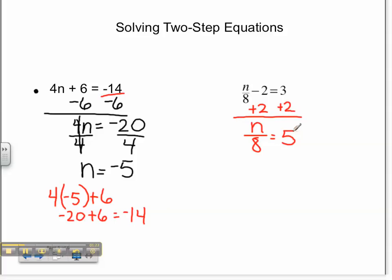In order to solve a division problem, we need to multiply both sides by 8. We are then left with n equals 40.